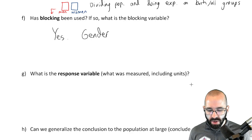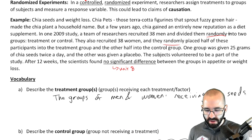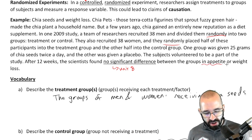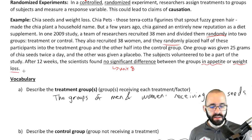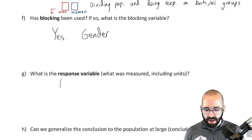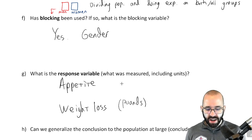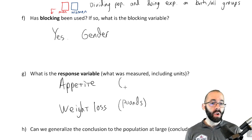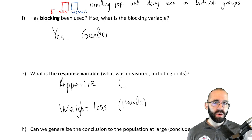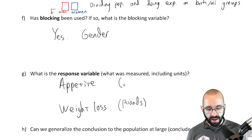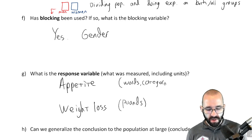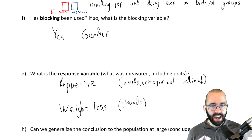What's the response variable — what did we measure? We found no significant difference, but we measured appetite and weight loss. Weight loss is probably in pounds or kilograms. Appetite might be categorical or ordinal data — something like 'what was your appetite before versus after' — probably expressed in words as some kind of categorical ordinal data. Weight loss would be in pounds or kilograms.